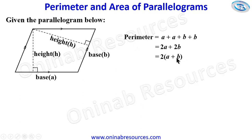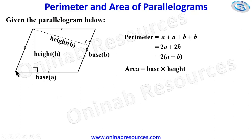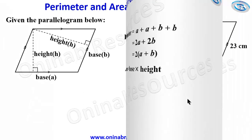We add the two sides and multiply the sum by 2 to give us the perimeter — this is the formula we will use. For the area, we will have the base multiplied by the height, either base A times its corresponding height, or base B times its corresponding height. These are the two formulae — perimeter and area — we are going to use in this tutorial. So we start with the first problem.